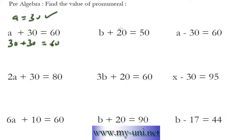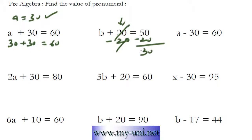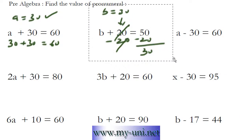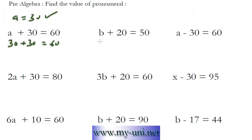Same deal here. We'll try to get rid of this number here. And we can subtract 20 from this side of the equation. And when we do that, we have to subtract 20 from this side of the equation as well. So these two will cancel out. 50 minus 20 is equal to 30. The value of B is equal to 30. We can check our answer by replacing the value of B in the equation. So the value of B was 30 plus 20, it is equal to 50. So our answer is right.